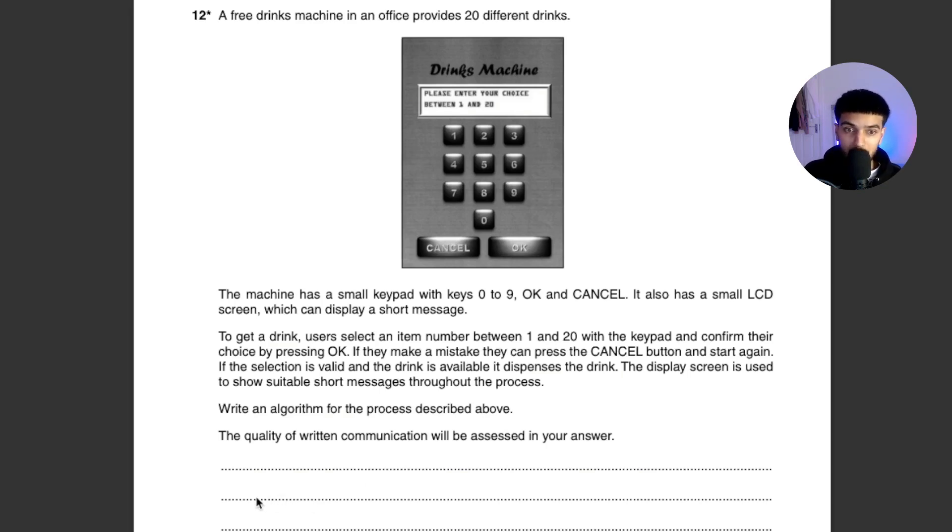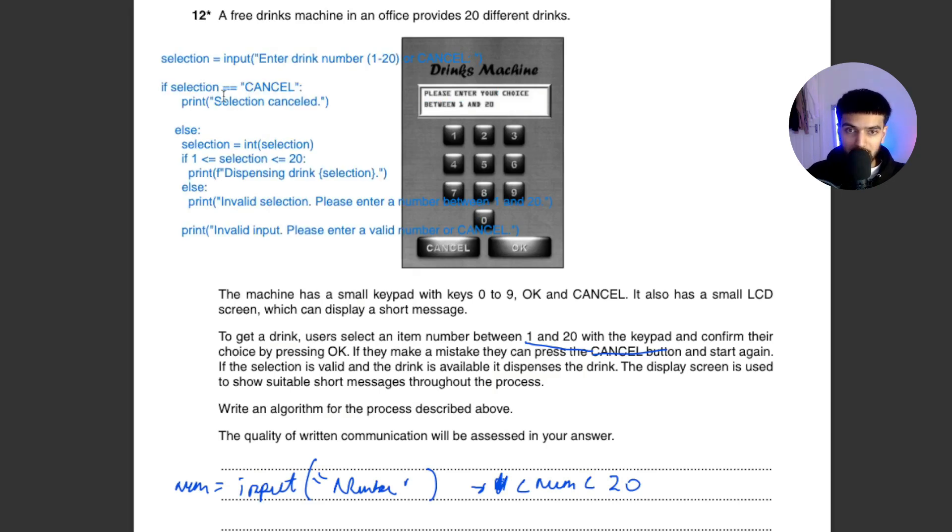So first you need to identify the key inputs you need to think about. What are we inputting into the system? So firstly we've been told that the users can input a number between 1 and 20, so we need to make sure we have some variable that we input a number - so obviously number, maybe we call this user number or num. Then what we need to do is we need to make sure that it's between 1 and 20, otherwise the machine's not going to know what to dispense. So we need to check if it's between, and we need to also have a cancel, and we would like to have some sort of loop so that we can keep asking them what drink they want unless they want to cancel, which that will be our condition.